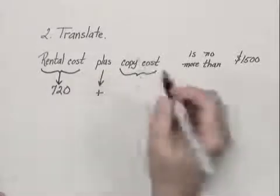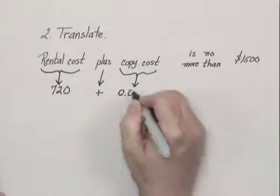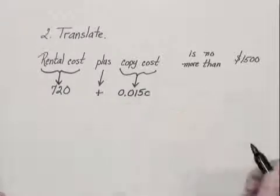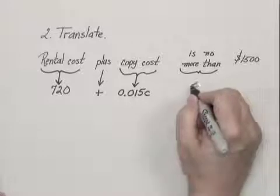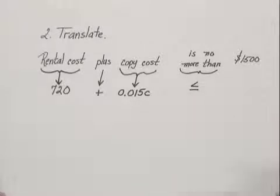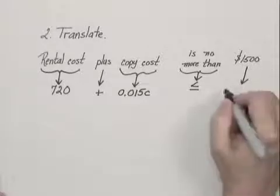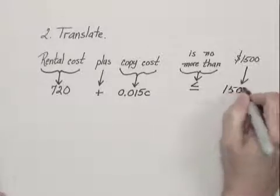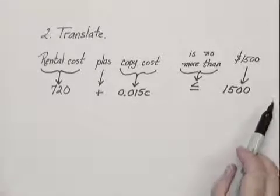Let's make sure we have the arrows to point exactly what we're doing. 0.015C is no more than, is less than or equal to, $1,500. And in this way, we've translated to an inequality.